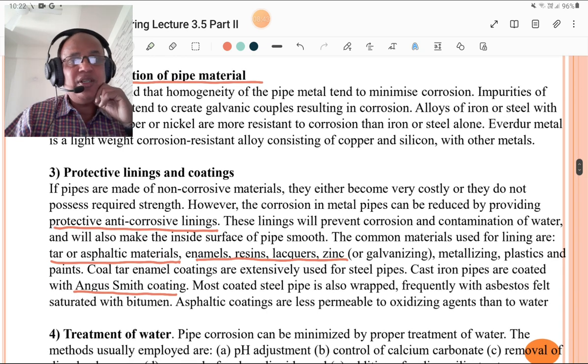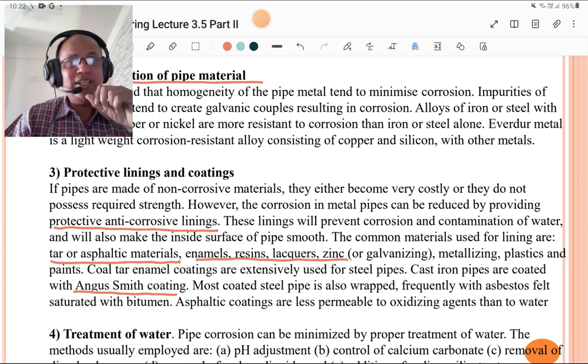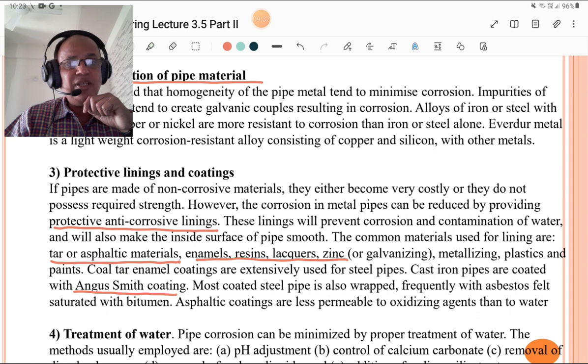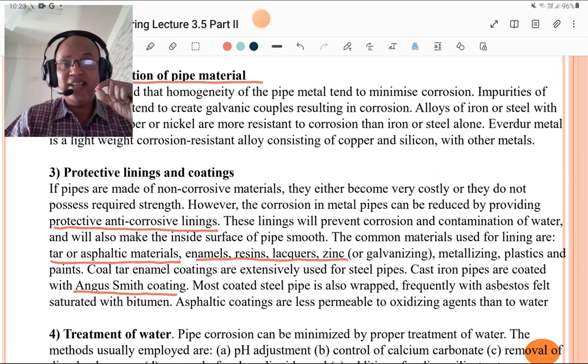Third is protective linings and coatings. If the pipes are made up of non-corrosive materials, they either become very costly or they do not possess the required strength. However, the corrosion in metal pipes can be reduced by providing protective anti-corrosive lining to pipes. This lining will prevent corrosion and contamination of water and will also make the inside surface of pipe smooth, so frictionless and velocity will be more. The common materials used for lining are tar or asphaltic materials, enamels, resins, zinc coating or galvanizing, metallizing, plastics, and paints. Coal tar enamel coatings are extensively used for steel pipes. Cast iron pipes are coated with Angus Smith coating. Most coated steel pipe is also wrapped frequently with asbestos felt saturated with bitumen. Asphaltic coatings are less permeable to oxidizing agents than to water.